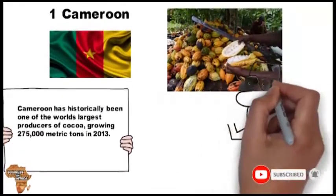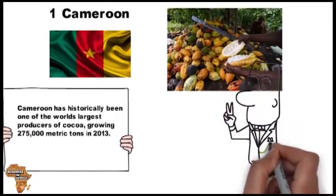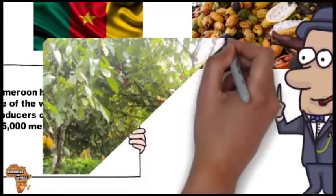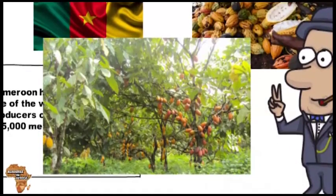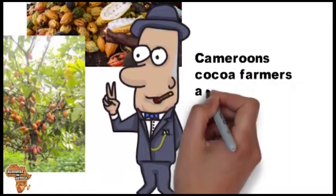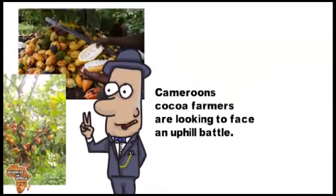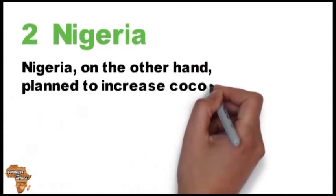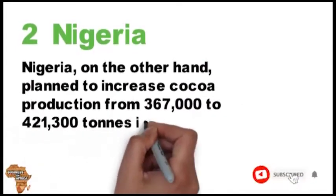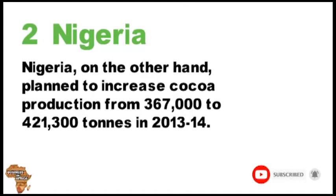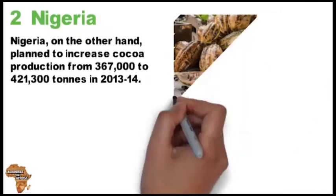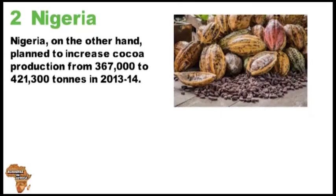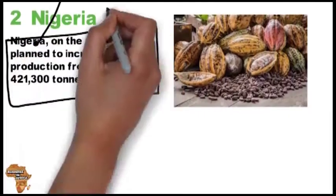Despite this, the cocoa business in Cameroon is under threat. Poor management of the cocoa crop has led to a dire situation — many of Cameroon's cocoa trees have aged past their prime production years. Without newer trees or enough space to plant them, Cameroon's cocoa farmers face an uphill battle. Number two: Nigeria. Nigeria planned to increase cocoa production from 367,000 to 421,300 tons in 2013–2014. Rising global prices, demand, and increased availability of cutting-edge agricultural technology have fueled significant growth.